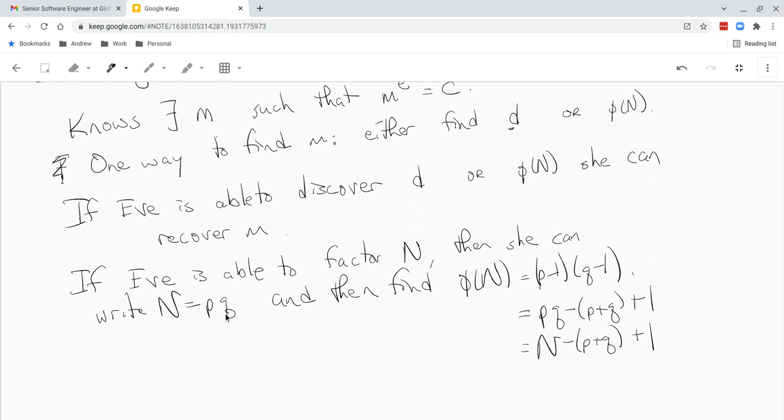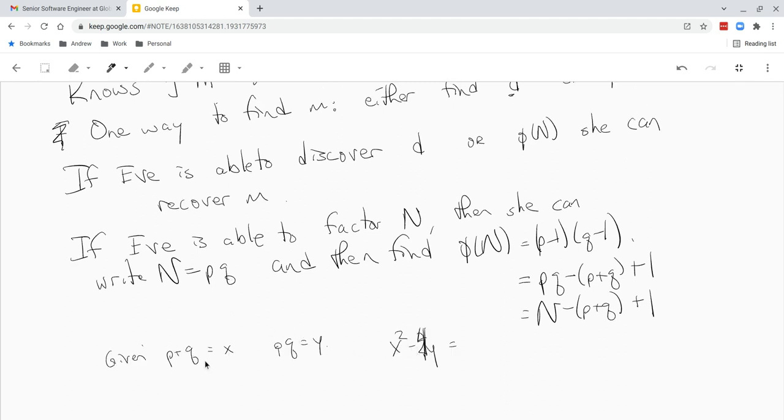Because she can just factor. So what you would do, you're given p plus q equals x, maybe pq equals y. If you compute x squared minus 4y, well, this is just p squared plus 2pq plus q squared minus 4pq, that's just p minus q squared. From that you can just compute the square root, you get p minus q. And once you know p minus q and p plus q, you get p and q, right? Just by solving a system of two linear equations. So if we know phi of n and n, we can compute the factorization. If we know the factorization, we can compute phi of n.